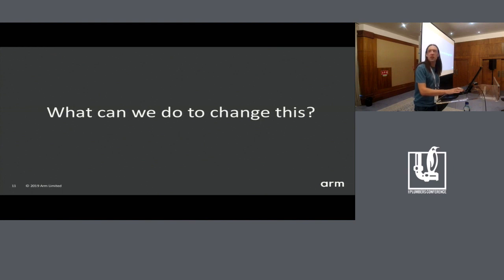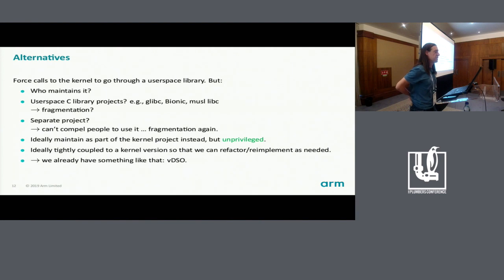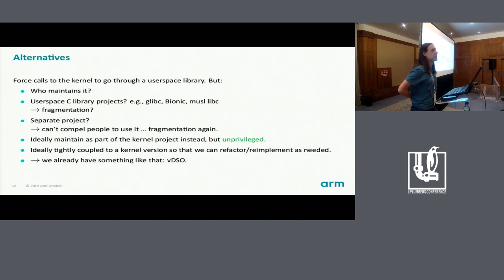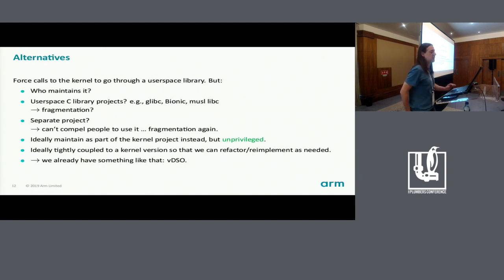Is there anything we can do to change this situation? The alternative that occurs to me is using some kind of user space library interface instead. But if it's a separate library, we have to ask who maintains it — it could be done in a user space C library like glibc or bionic, but those are developed by different communities and may not be completely in sync with what the kernel is doing. Another option is a separate standalone library, but we can't force people to use it and there's a risk of fragmentation. So it would be nice to maintain this as part of the kernel project but not have it run privileged, and keep it tightly coupled to the kernel version for flexibility to refactor over time.